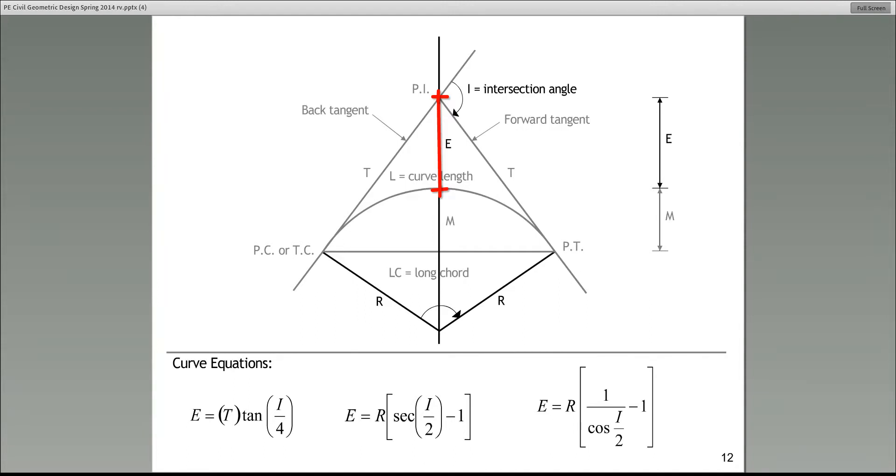The three equations in the bottom of this page give us a relationship between the external distance E and T, which is the tangent distance. I don't think I mentioned that before, but please note, and this is very important. The distance between the PC and the PI, we have defined that as the back tangent, but that distance we refer to as T, capital T, and that's in this equation down here. And of course, I repeat the first equation: E is equal to T times tangent of I over 4.